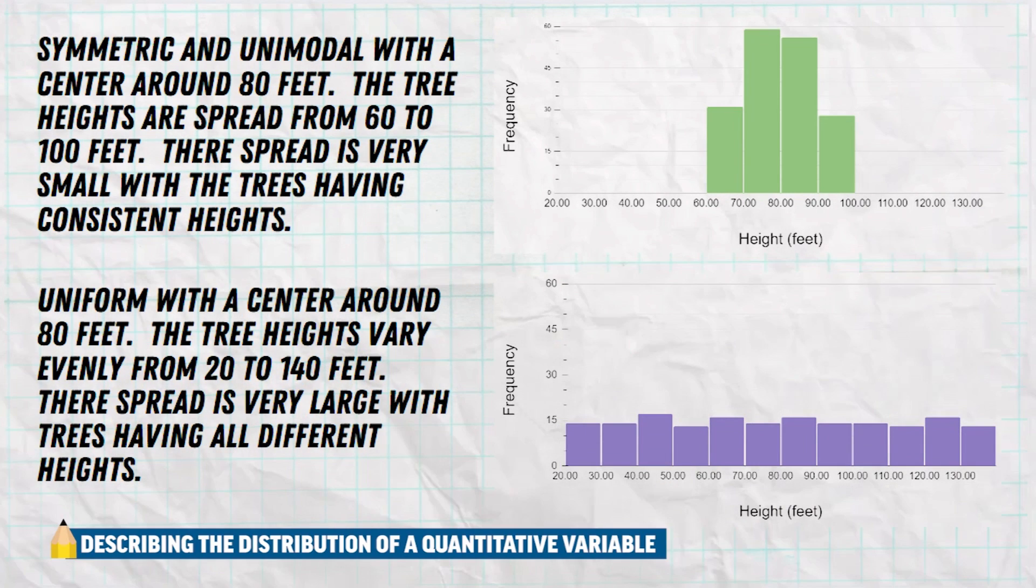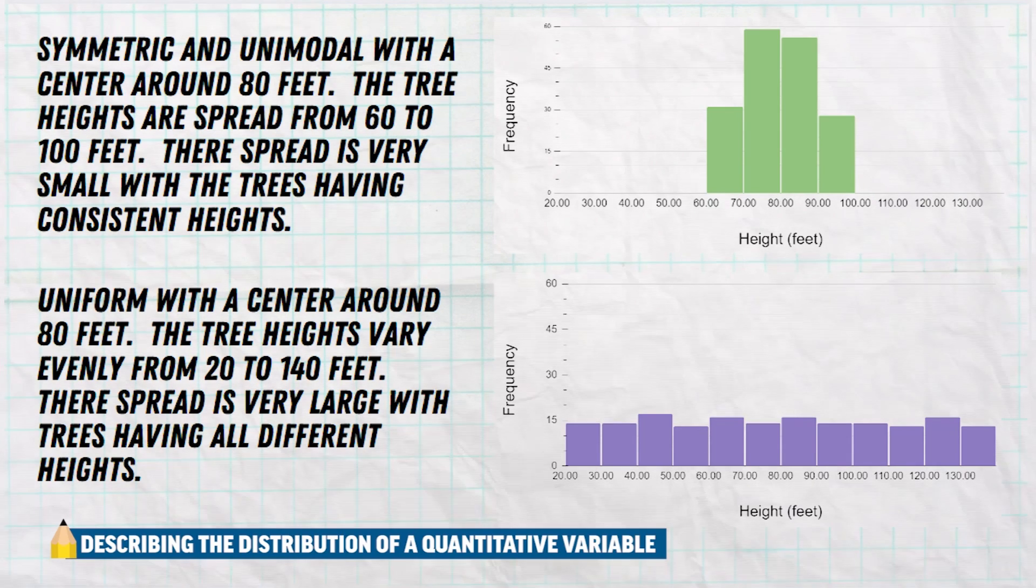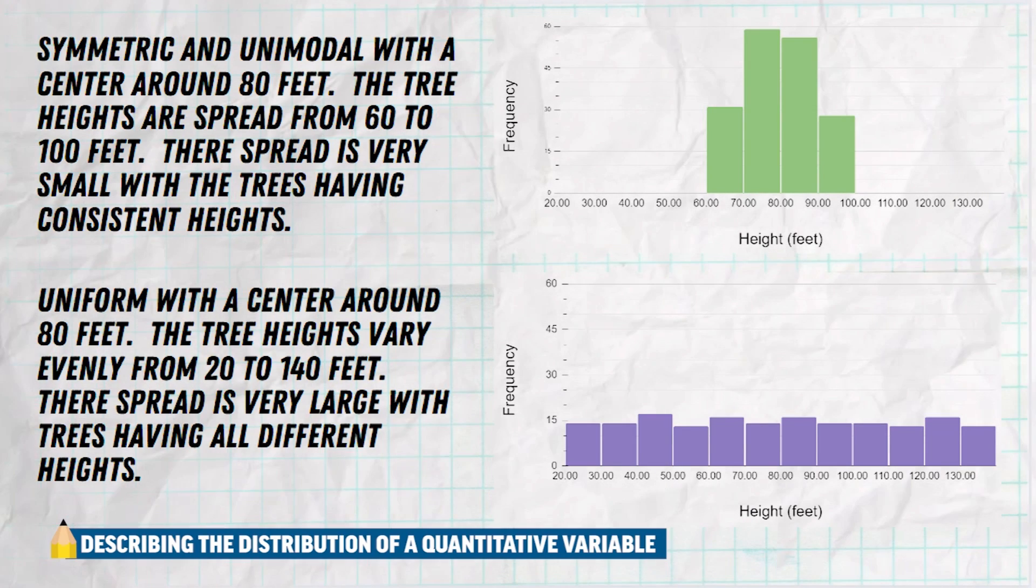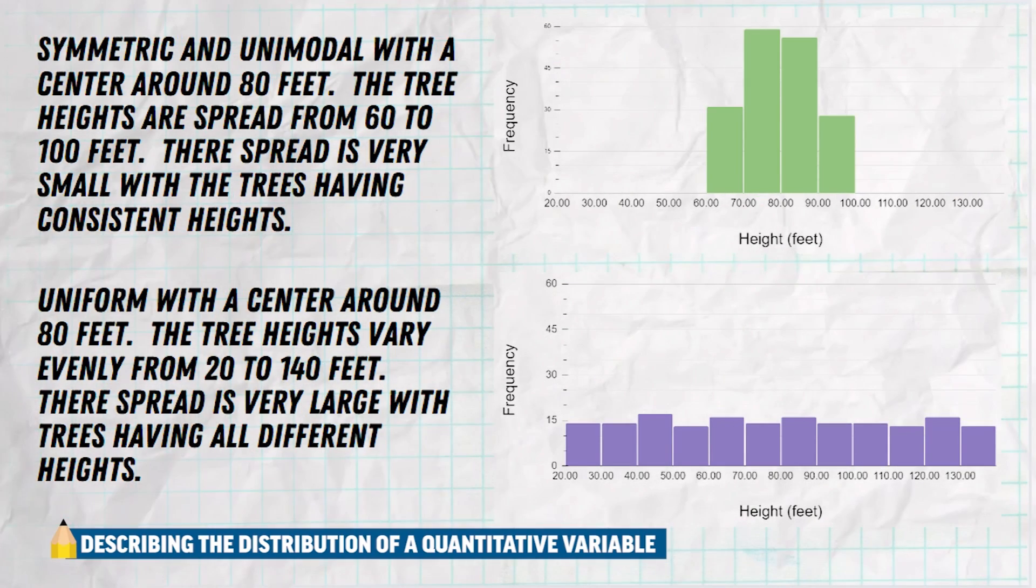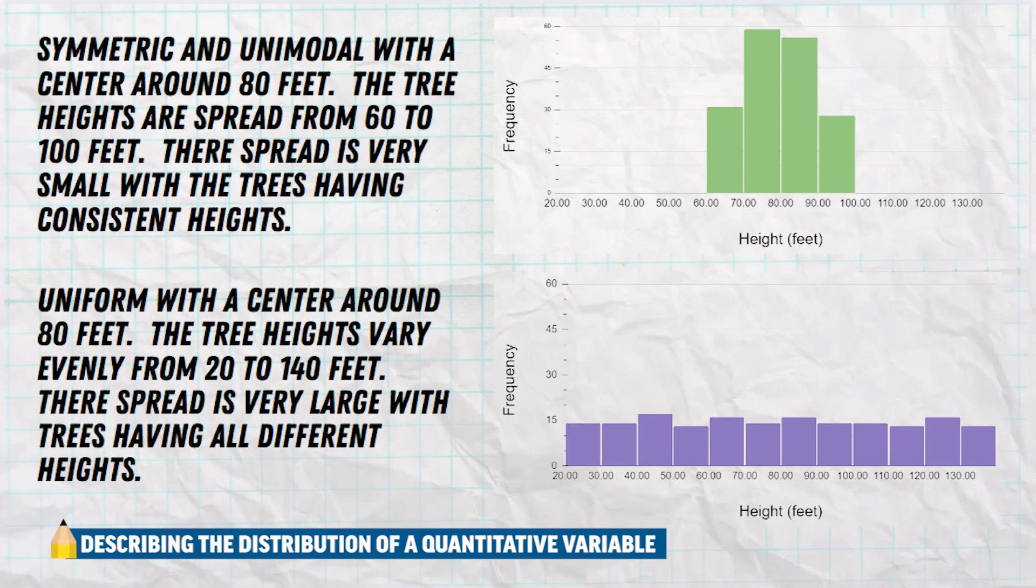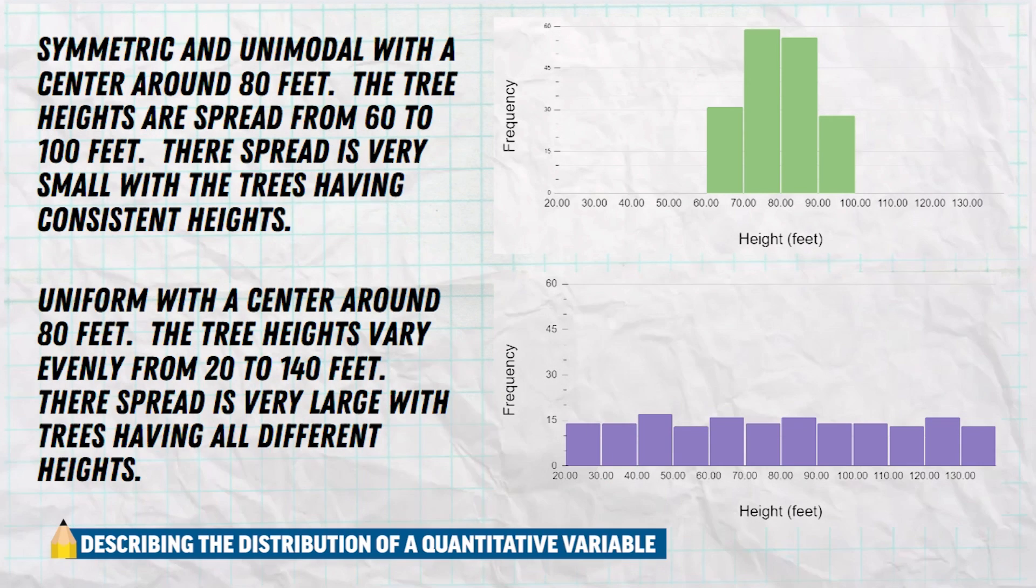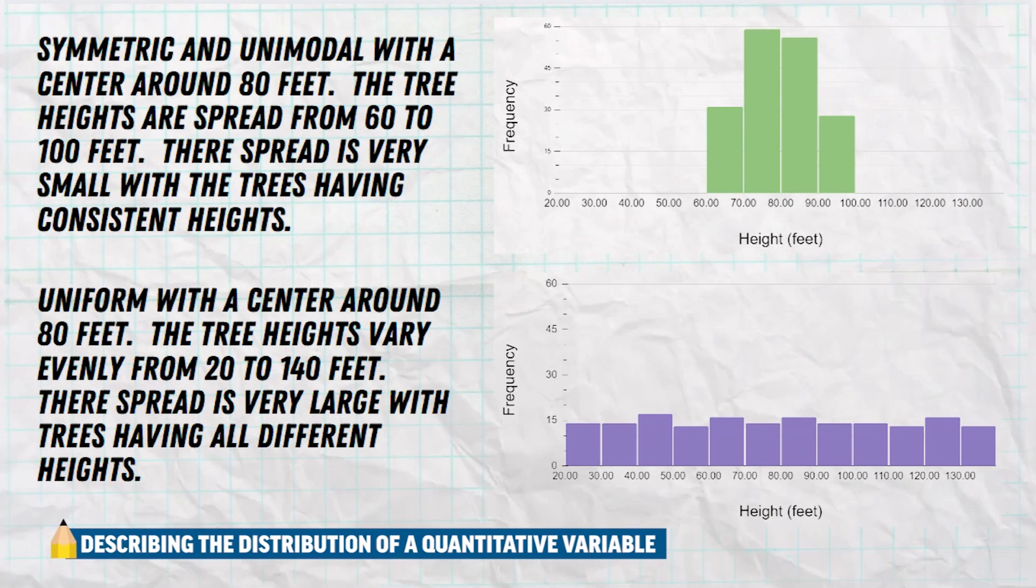Here we have two more graphs that are both symmetric, but what the biggest difference between these two graphs is how spread out they are. The one in green is far less spread out than the one in purple. In green, we have a center of 80, but it's all clustered together from 60 feet to 100 feet. Whereas in purple, we also have a center probably around 80 feet, but it's very evenly spread from 20 all the way up to 140. When your data is very evenly spread like this, we typically call it uniform.